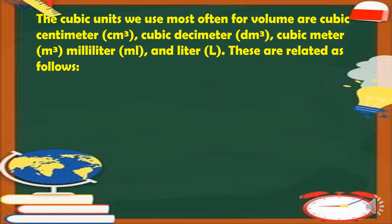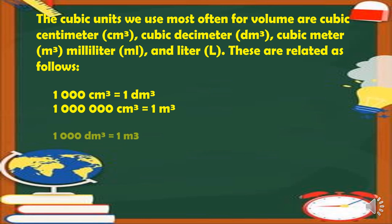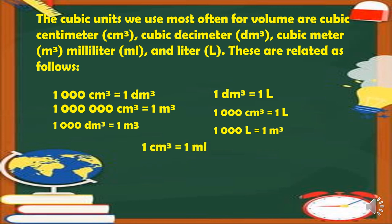The cubic units we use most often for volume are cubic centimeter, cubic decimeter, cubic meter, milliliter, and liter. These are related as follows: 1,000 cubic centimeters equals 1 cubic decimeter; 1,000,000 cubic centimeters equals 1 cubic meter; 1,000 cubic decimeters equals 1 cubic meter; 1 cubic decimeter equals 1 liter; 1,000 cubic centimeters equals 1 liter; 1,000 liters equals 1 cubic meter; and 1 cubic centimeter equals 1 milliliter.